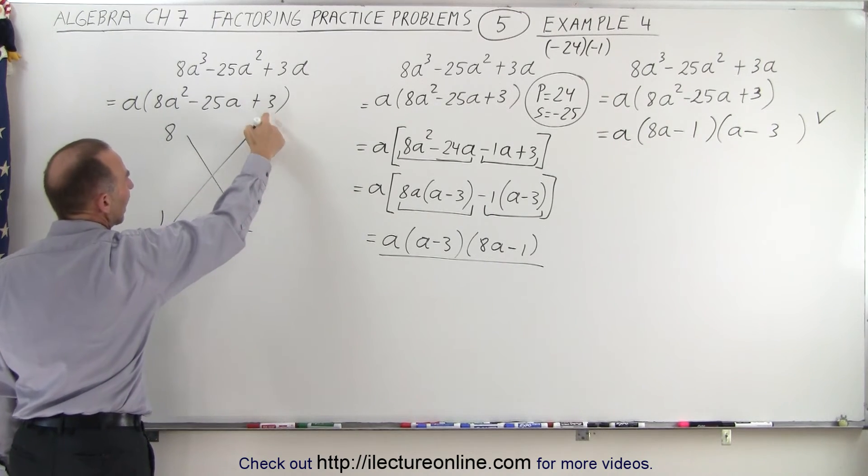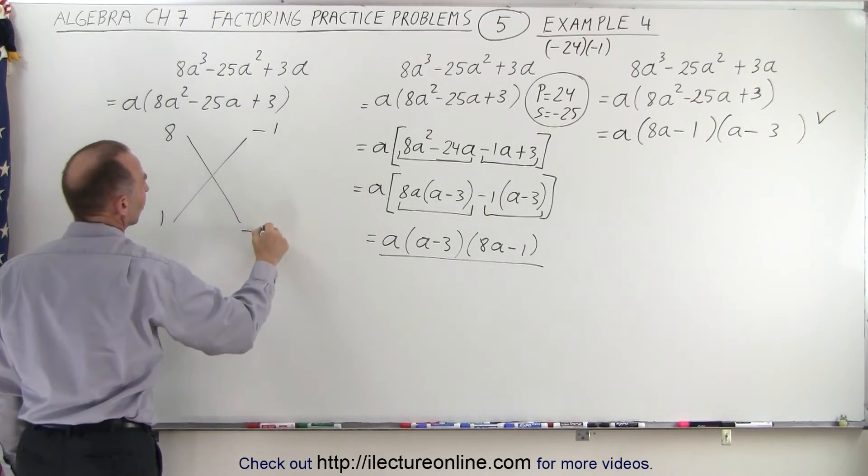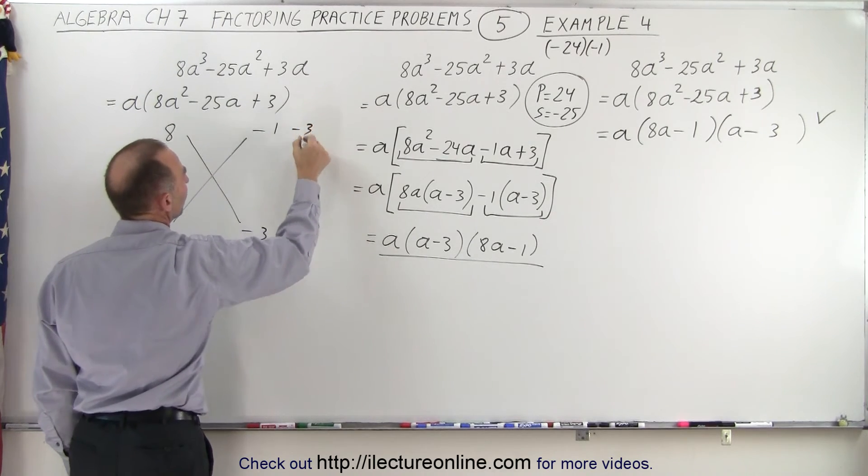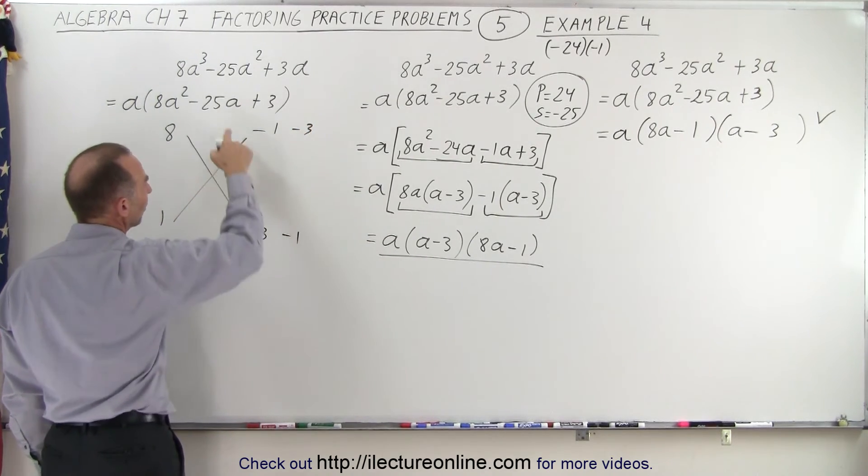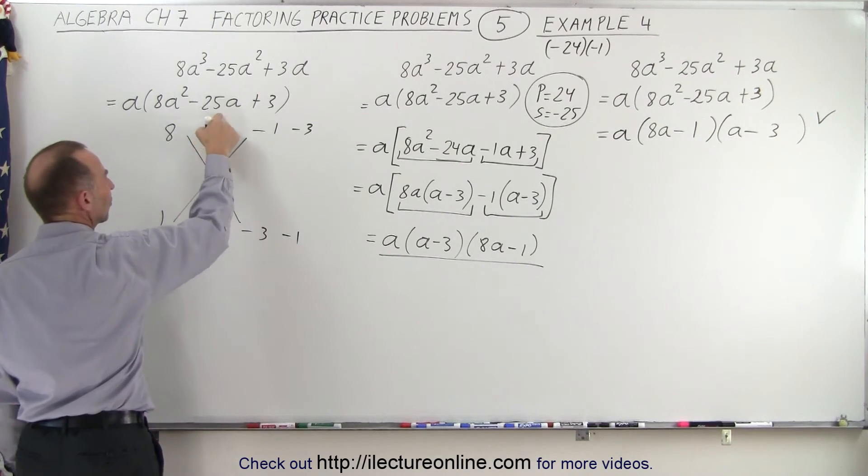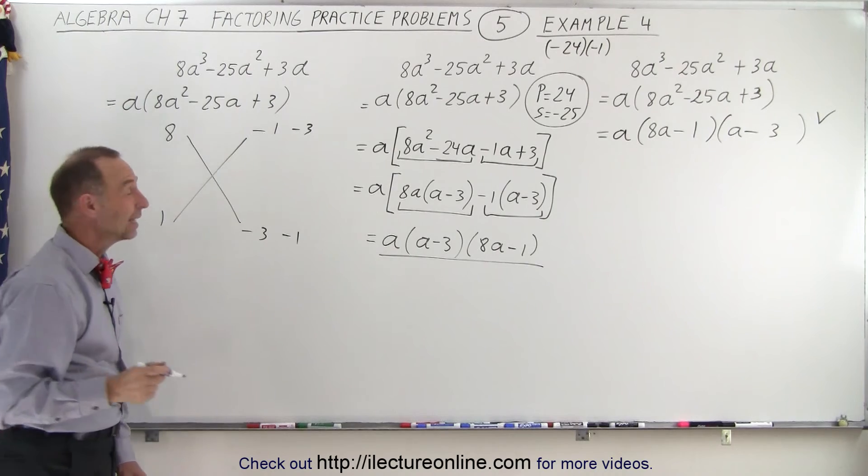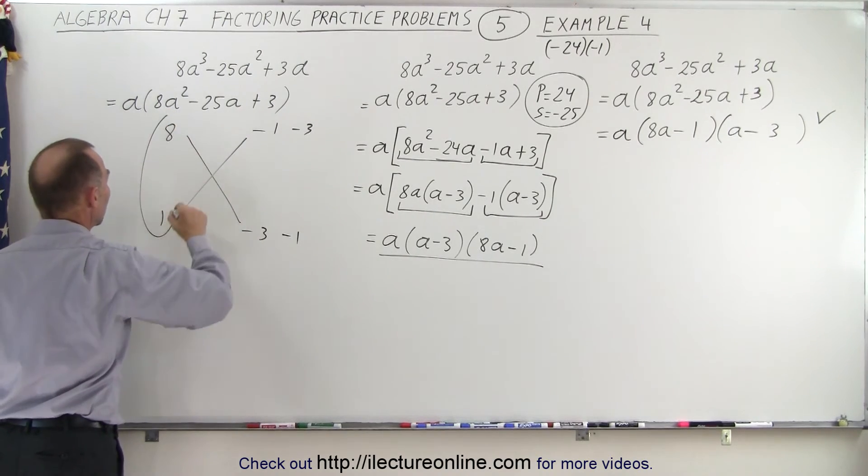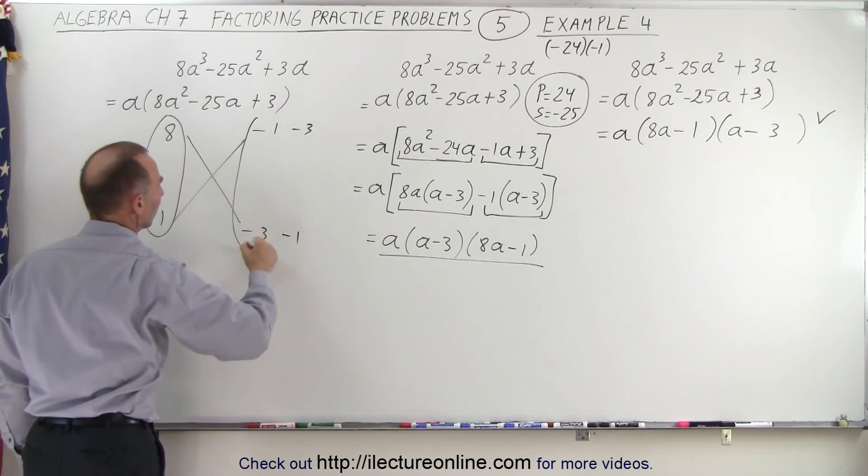So to get 3, I can multiply 1 and 3 or minus 3 and minus 1. But notice, since I want a very big middle term, the negative 3 times a positive 8 gets us really close. So I'm betting that this will be the correct combination, these two numbers and those two numbers.